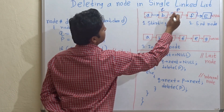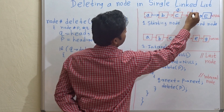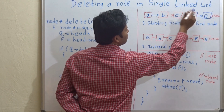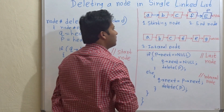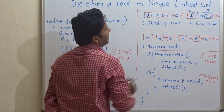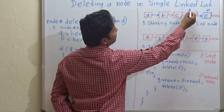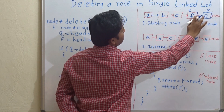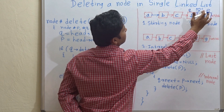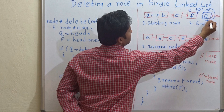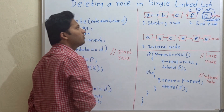Continue moving P and Q ahead by one location each iteration until P reaches the last node. When P points to null's predecessor — that is, P points to the last node — in this case you make Q's next pointer point to null, and then delete P. This is how we delete the last node.